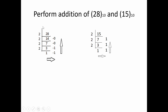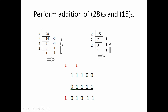First we have to convert the given decimal into binary using successive division. 28 divided by 2 gives us 1111100, and converting 15 to binary gives 1111. The binary for 28 has 5 bits and 15 has 4 bits. Before adding, make sure the number of bits is the same, so we add a 0 in front of 15, making it 01111.